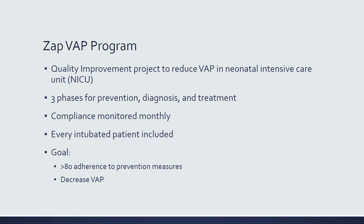The ZAPVAP program is a hypothetical quality improvement project to reduce VAP in the NICU. It is composed of three phases: prevention, diagnosis, and treatment. You can monitor compliance to the measures monthly to generate quality improvement data. Every intubated patient is enrolled, with the goal of having 80% of providers adhere to the measures and achieving an overall reduction in VAP rates.